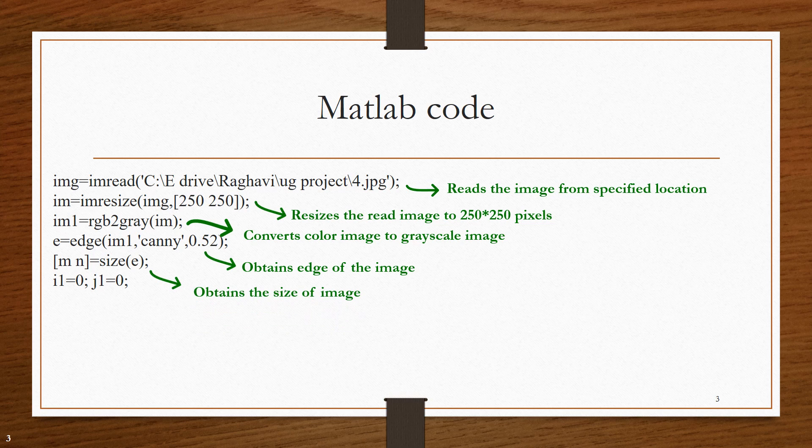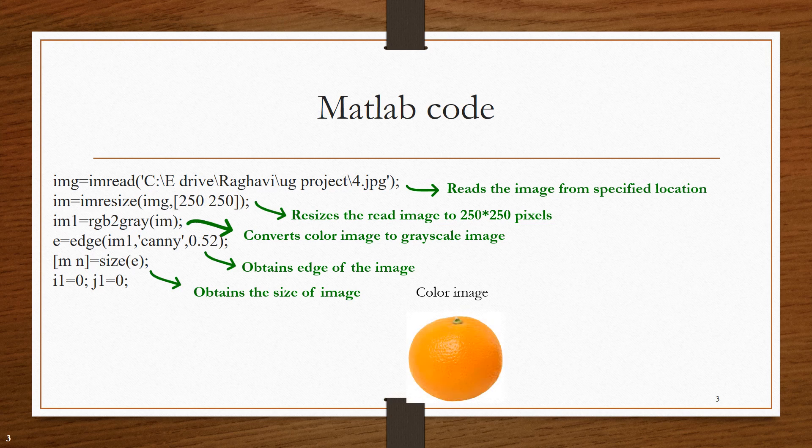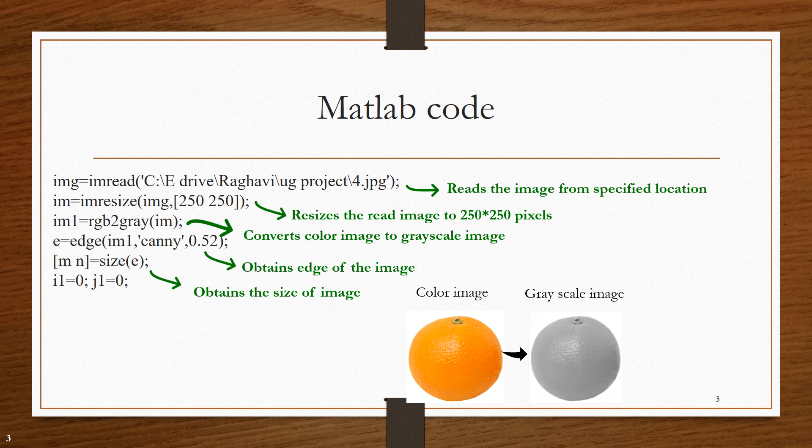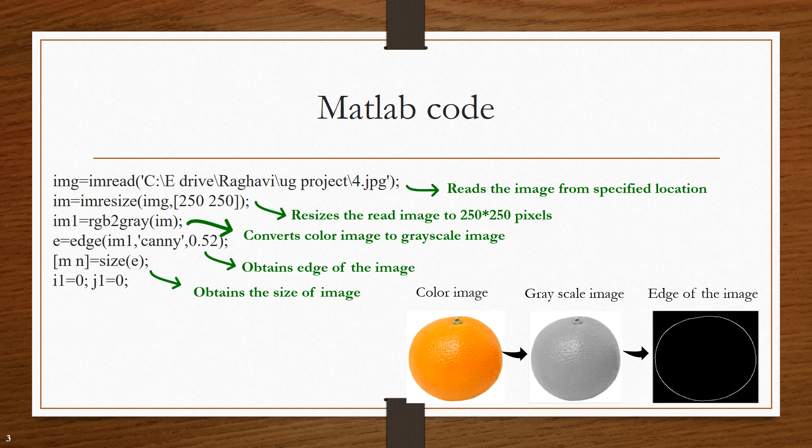Then, the size of this edge image is obtained and stored in variables m and n. Now, this is the color image for which grayscale image is obtained for which edge is being detected.